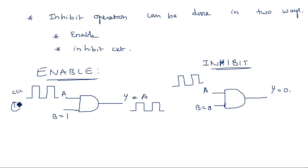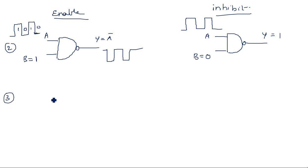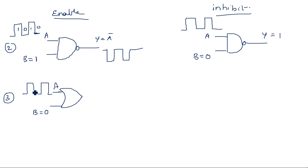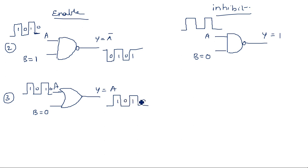Now let us see the third case — OR gate. One input is fixed to B = zero and the other input is a clock signal with one-zero-one-zero. When one input of an OR gate is zero, it follows the other input: zero-one, output is zero-one. So the output simply equals A — Y = A.